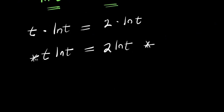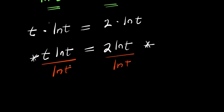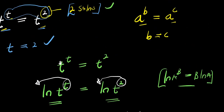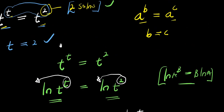At this point we are going to make use of two different methods. The first method: I can divide each side by ln t. This means ln t eliminates ln t, and I have t equals 2. This solution corresponds to the one we had earlier, which is t equals 2.